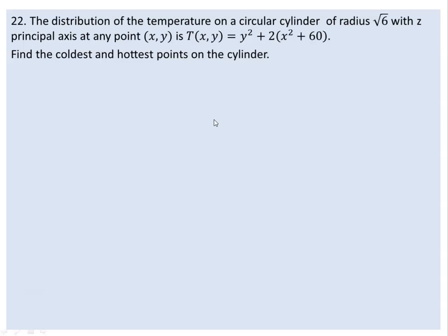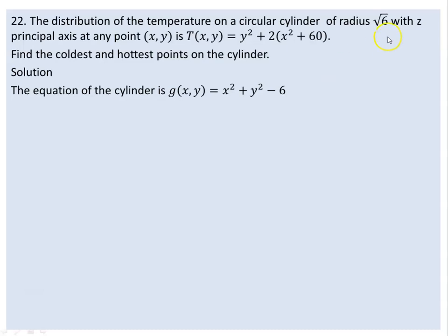The solution goes like this. The equation of the cylinder is x squared plus y squared equals 6. We need partial derivatives: the partial derivative of T with respect to x equals 4x, since T equals 2x squared. So the partial derivative gives 4x.